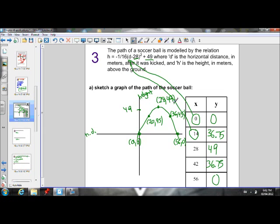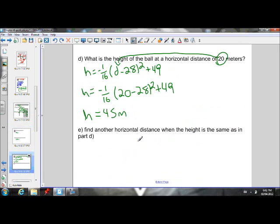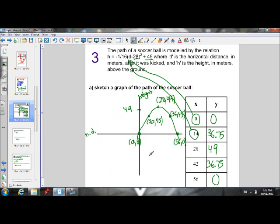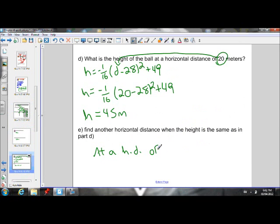Okay, so the answer to this one, find another horizontal distance when the height is the same as in part D. So at a horizontal distance of, what was it, 36. Of 36 meters, the height is 45.